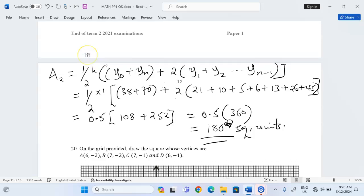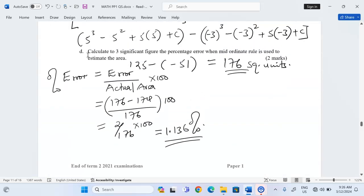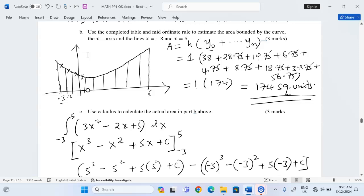Therefore, area by the trapezoidal rule would be 180 square units. The exact area, 176 square units. Estimation by the mid-ordinate rule, 174. In most of the times, you discover that area by trapezoidal rule is slightly ahead or slightly above the exact. By trapezoidal rule, we have 180 square units. Mid-ordinate rule estimates a value just below the exact. The trapezoidal rule, just above. But area by integration is an exact value.